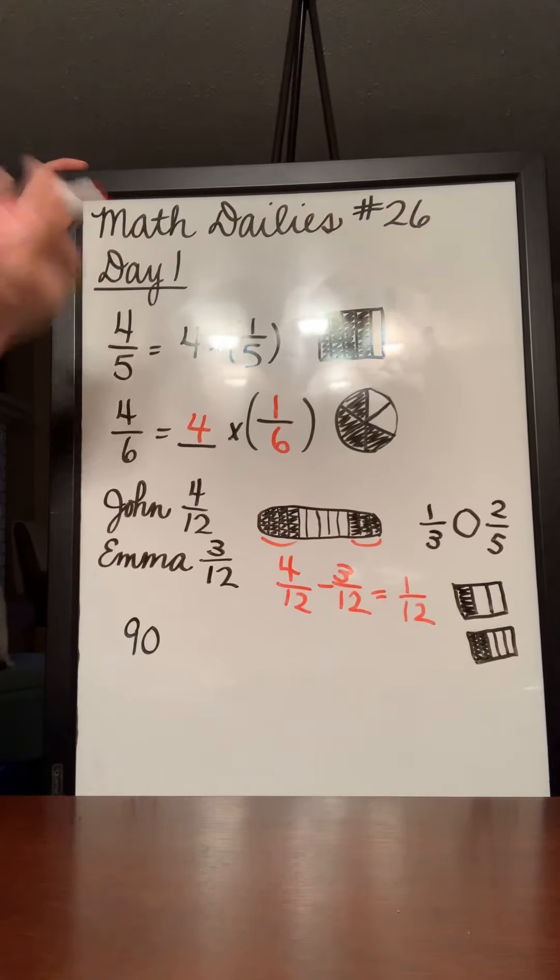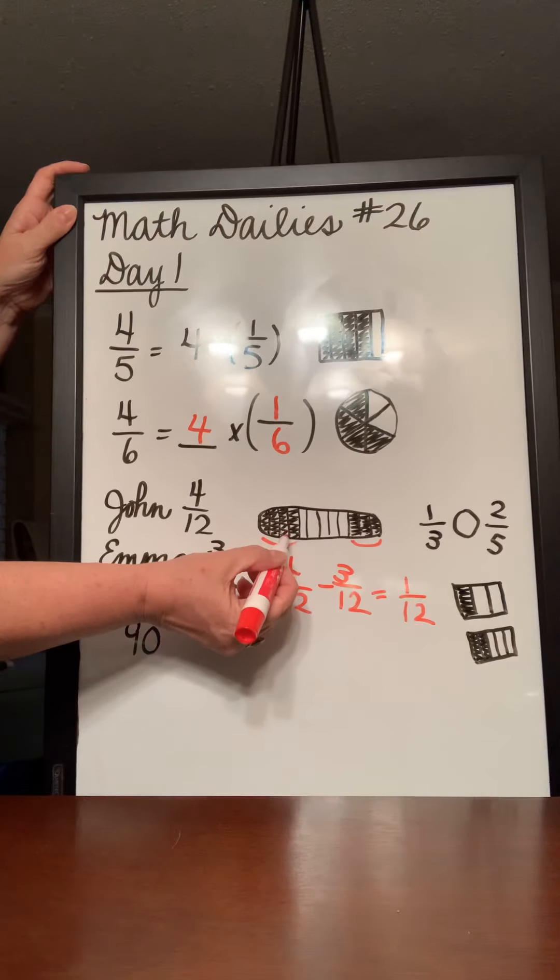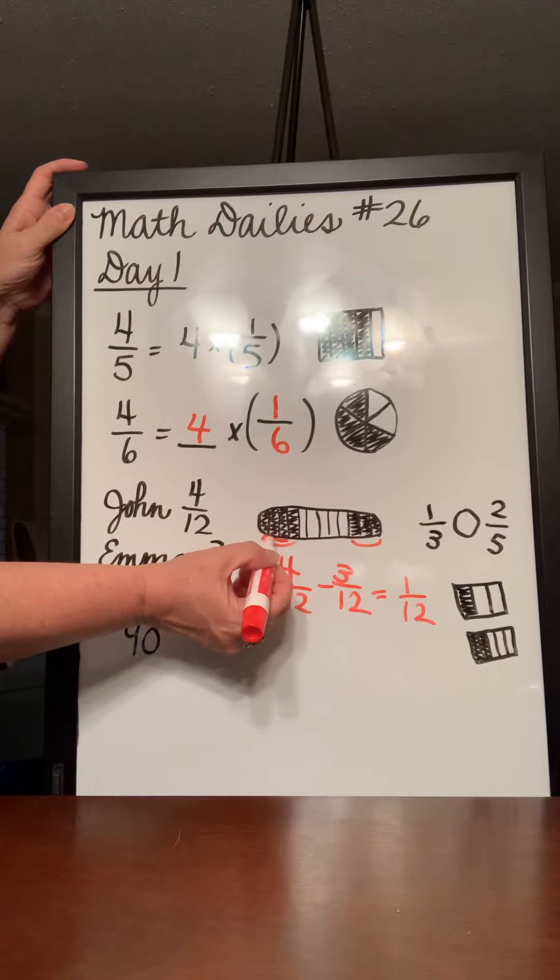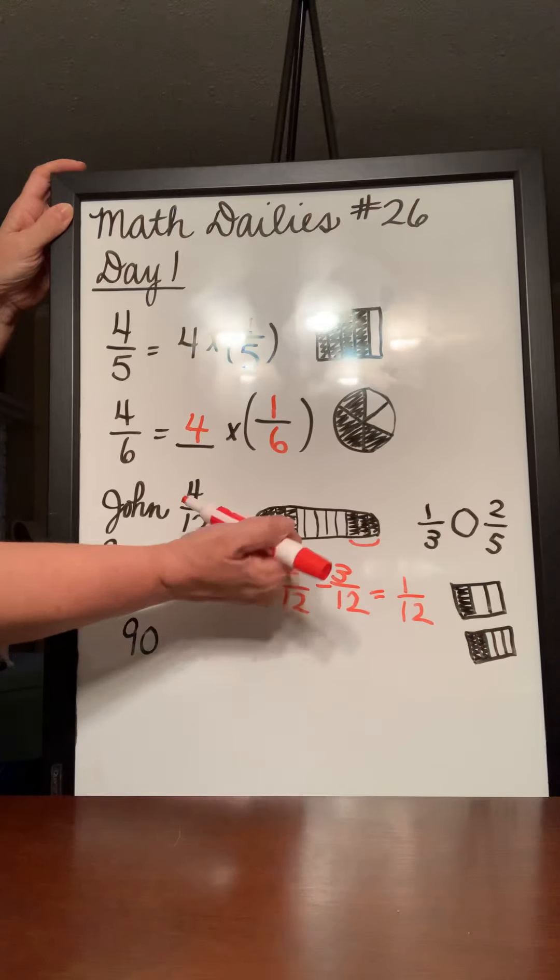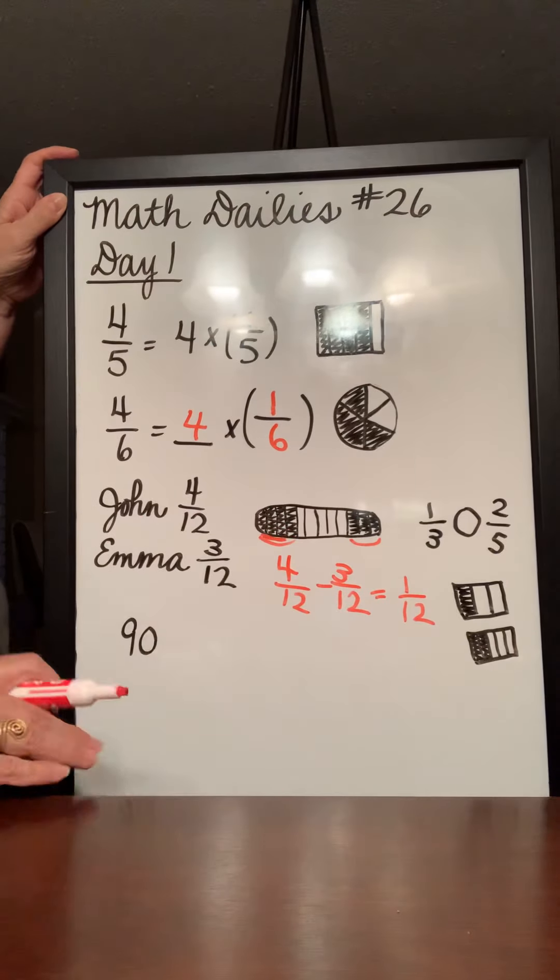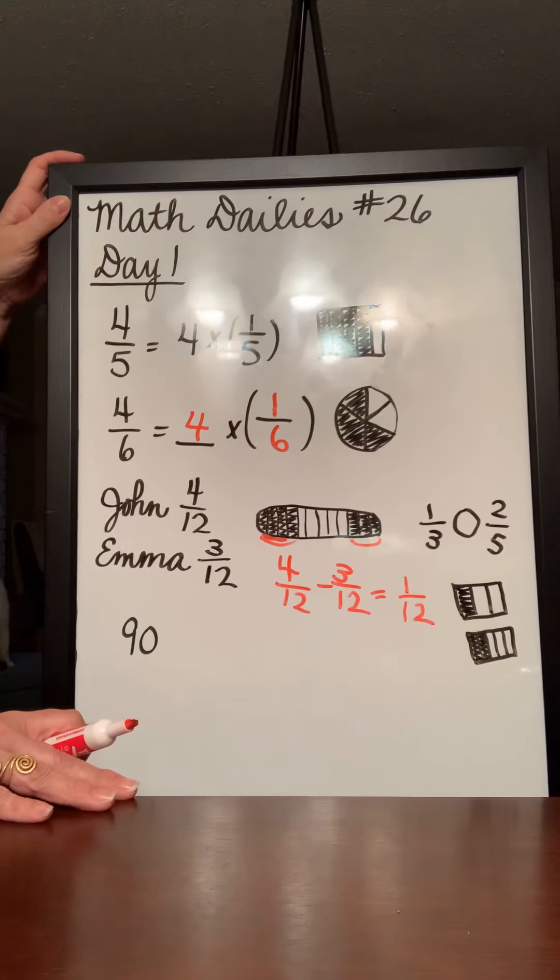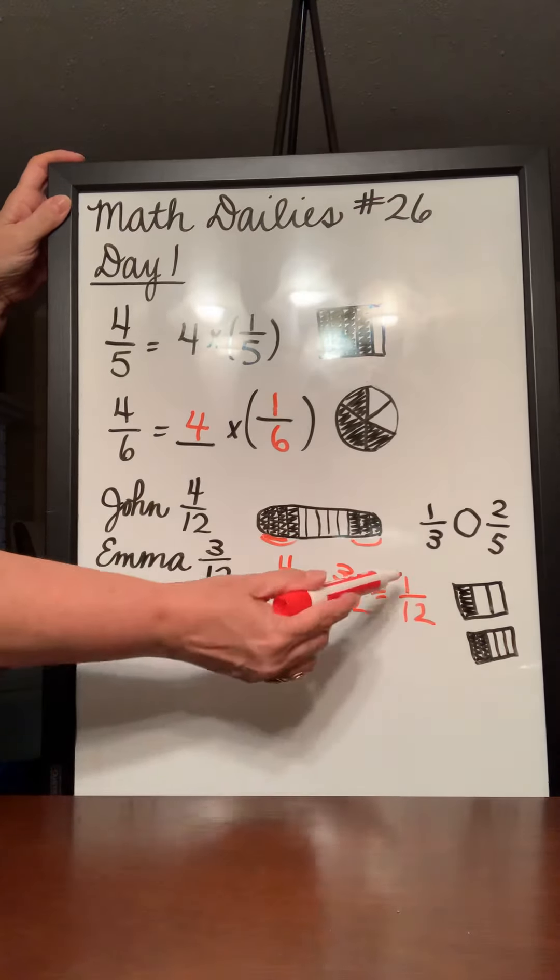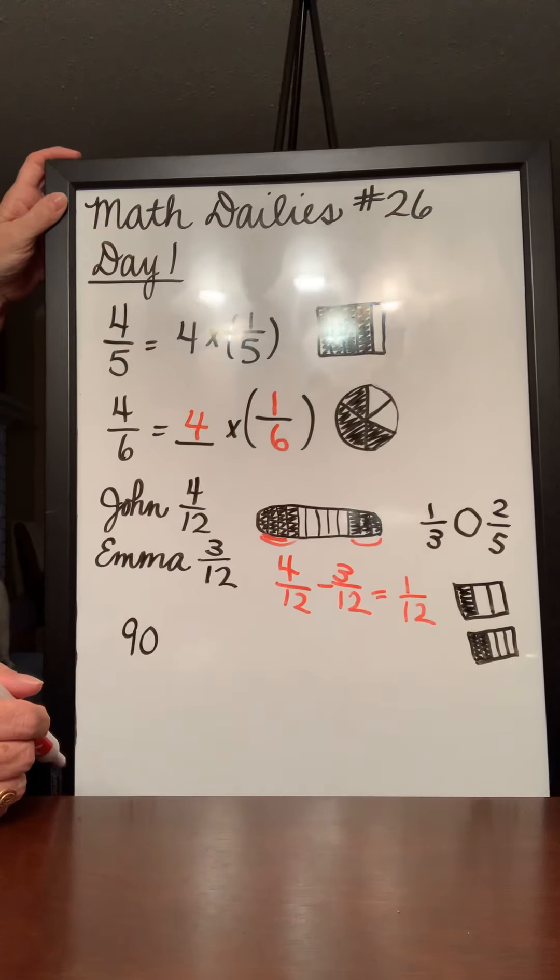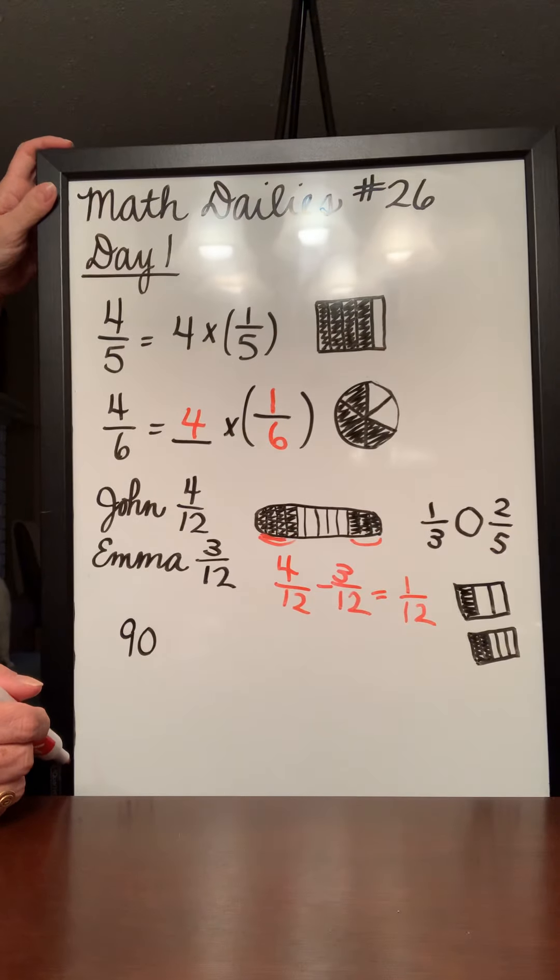And you can also look at the picture and compare if we took these three that were equal to Emma away, because she ate 3. If we took those three away, we'd have one left over. And so you can use the picture as well. But it's just a simple subtraction. 4 minus 3 equals 1. And just keep your denominator on the bottom.